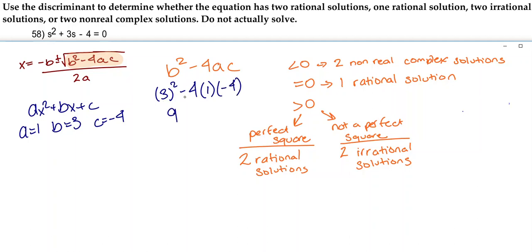3 squared is 9. I'm going to bring down my minus sign. 4 times 1 times negative 4 is negative 16. This double negative turns into a positive, so this really says 9 plus 16, which is 25. So 25 is a perfect square, and it is a positive number. Therefore, we're going to end up with two rational solutions.